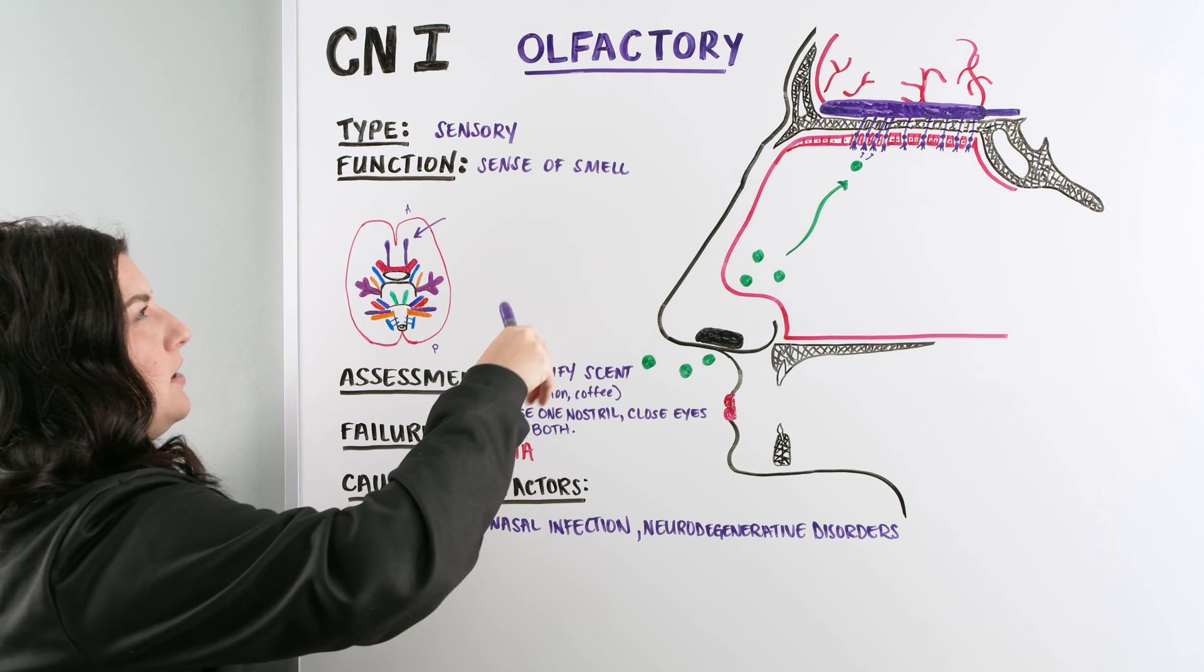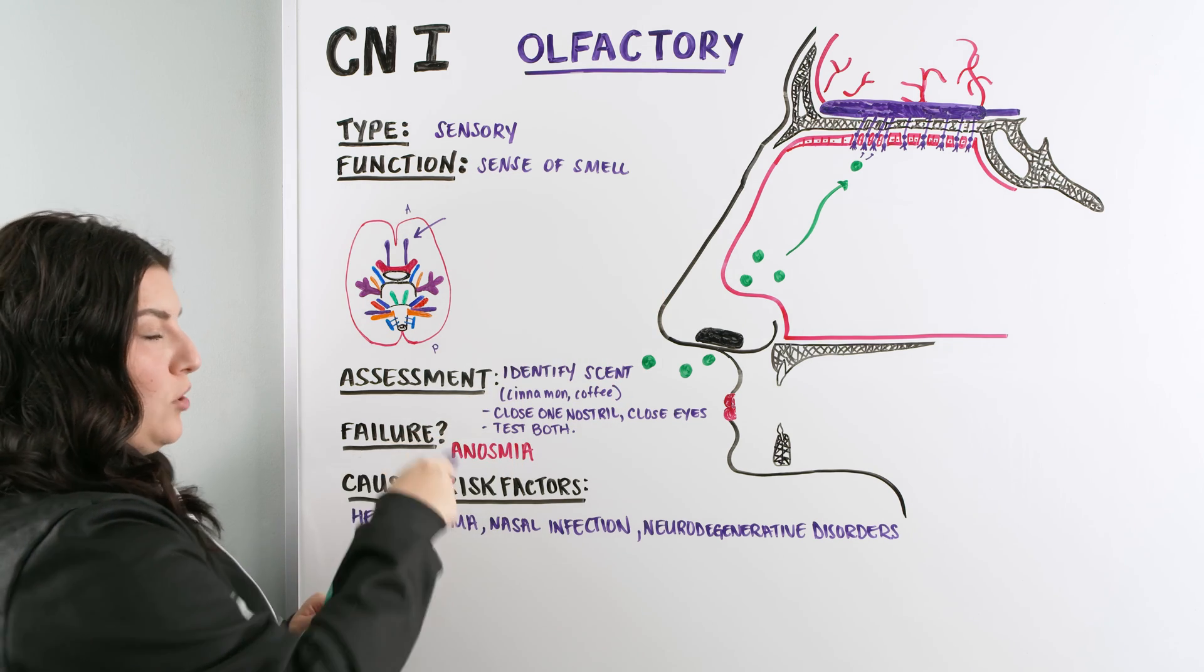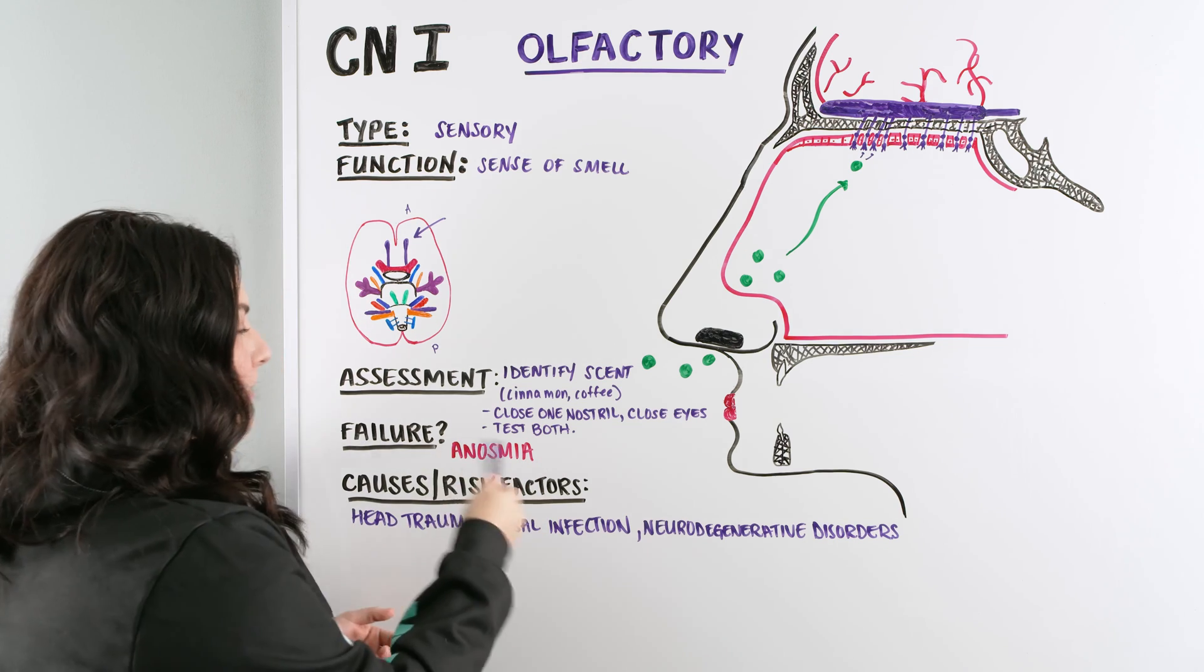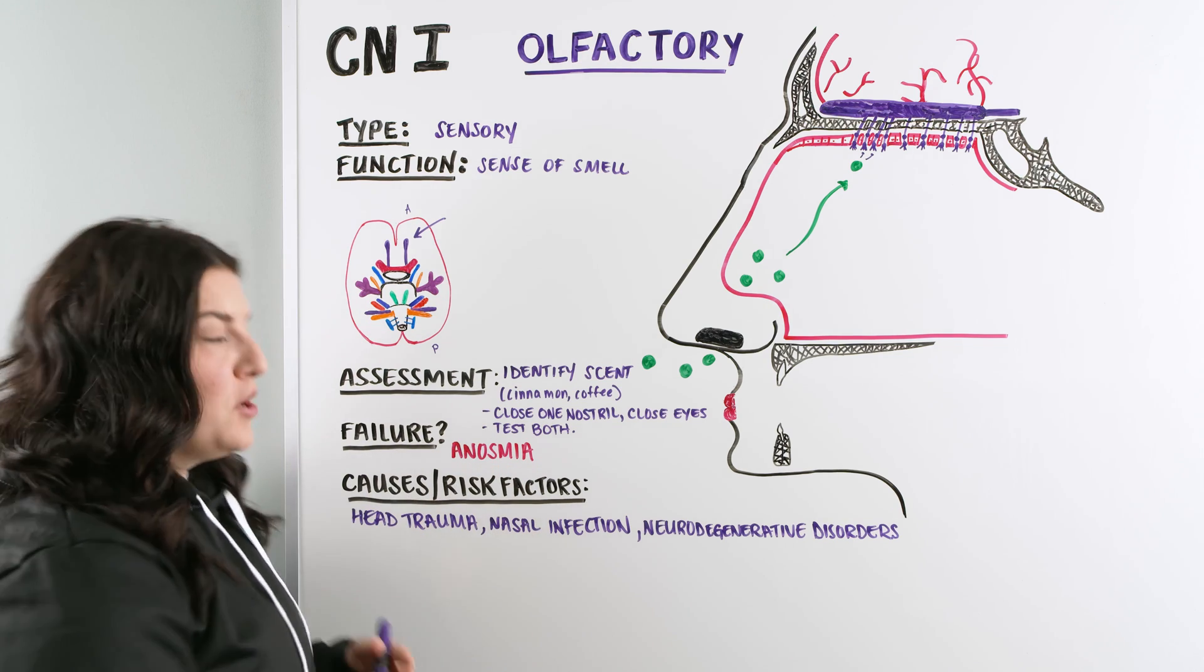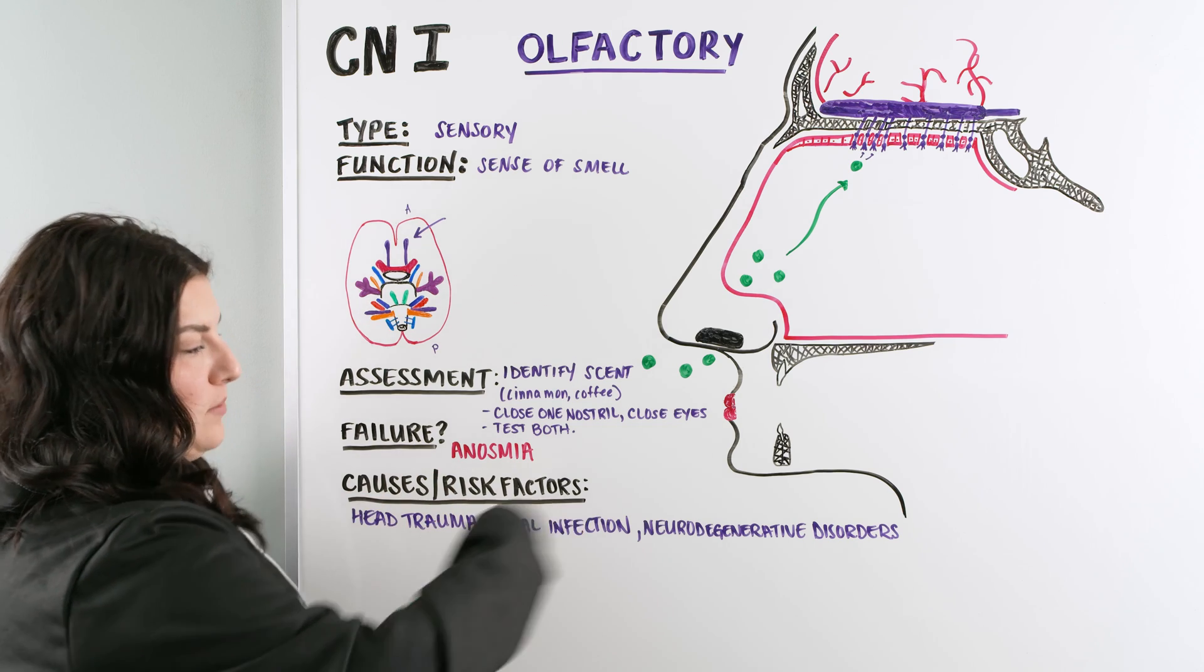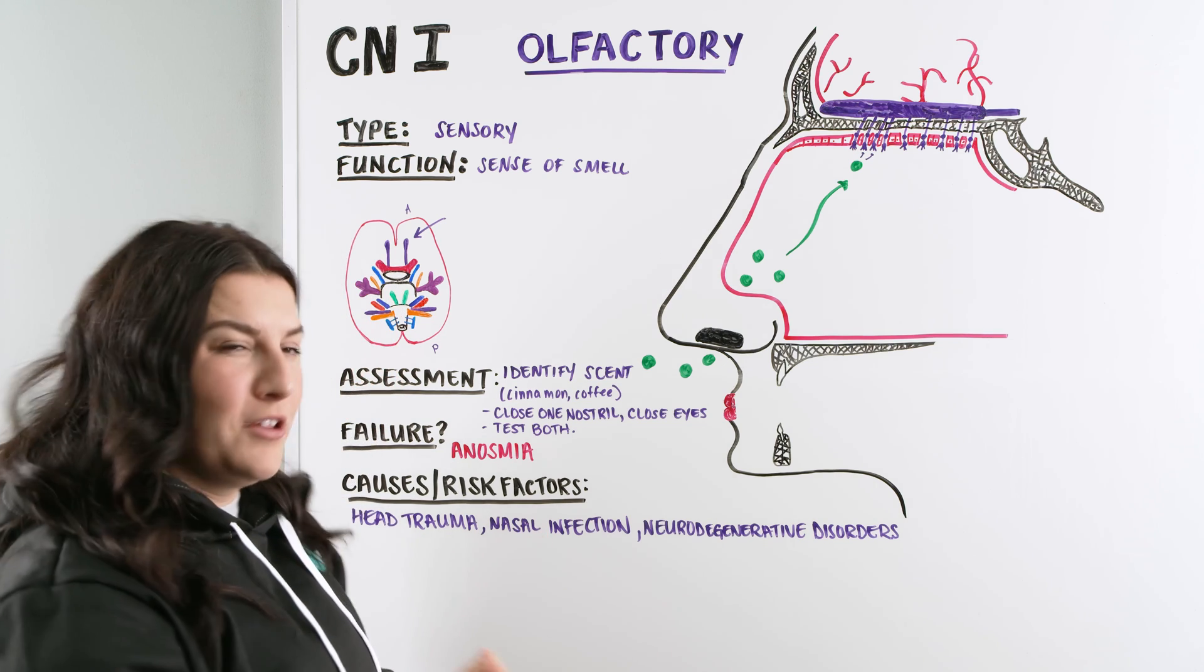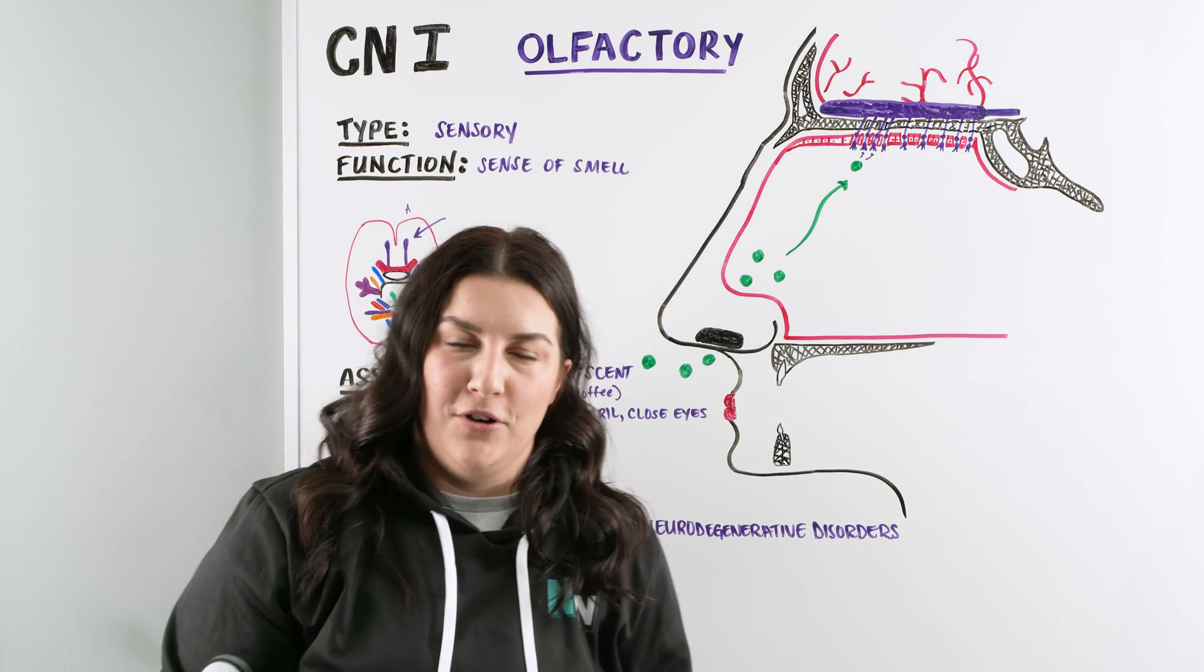But this at least gives us an area of, okay, we have identified that the assessment has gone wrong. There's something wrong within the assessment. They're failing. They either have a decrease or no sense of smell. What are our pathways that we're going to go down? Are we investigating head trauma? Is there infection? Is there something else going on? So I hope this video made sense. I hope it cleared up a little bit about the olfactory nerve.